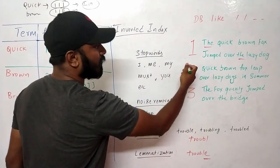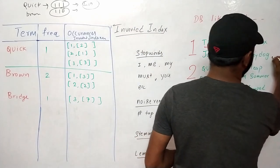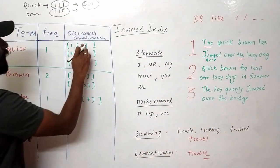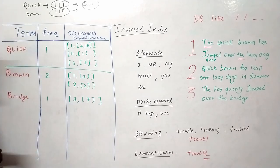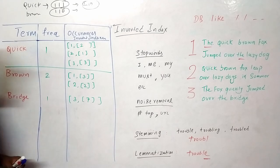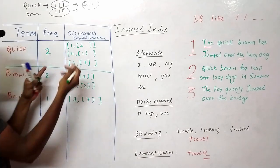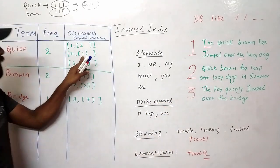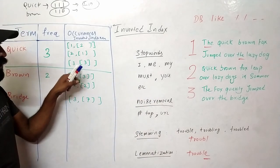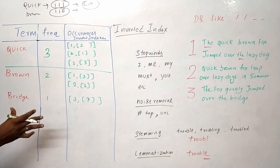In the second document, 'quick' is present at position one. In the third document, 'quick' is also present — at position three. So the total count is three, and we have three entries: [1, 2], [2, 1], [3, 3]. Similarly, you build this for all unique words in the documents you want to index. Whenever you want to search something — say 'brown' — you use a hash map or dictionary to go to that entry in O(1). The data tells you how many times it appears across all documents and in which document at which position.